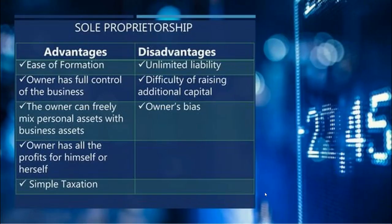The advantages of single proprietorship include: ease of formation, the owner has full control of the business, the owner can freely mix personal assets with business assets, the owner keeps all the profits, and taxation is very simple. Disadvantages include unlimited liability, difficulty of raising additional capital, and owner's biases.